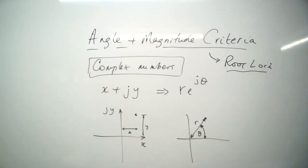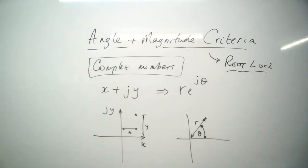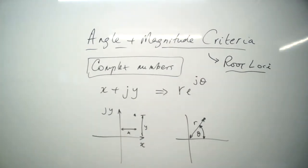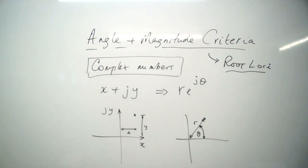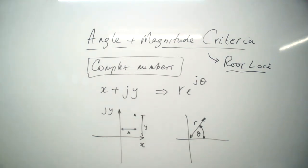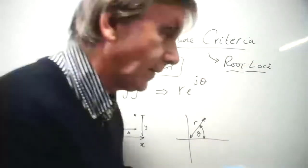Let's have a look at this. We start off with a look at this angle and magnitude criteria. It's a trick you can use with the root loci method for getting accurate numbers off the root loci plot. The plot we tend to do is a sketch, so it's not that accurate, but if you use the angle and magnitude criteria on the sketch you can extract more accurate numbers from it. So in that respect it's quite a good little tool to have.